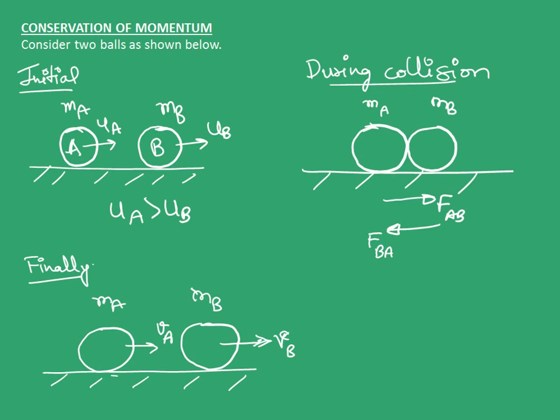Mass of ball A is MA and mass of ball B is MB. Consider UA to be greater than UB so that collision occurs between the two balls. During the collision, as soon as A strikes B, there is a force FAB applied by A on B. By third law of motion, there is an equal yet opposite force FBA acted on A by B. Finally, ball A moves with velocity VA and ball B moves with velocity VB.